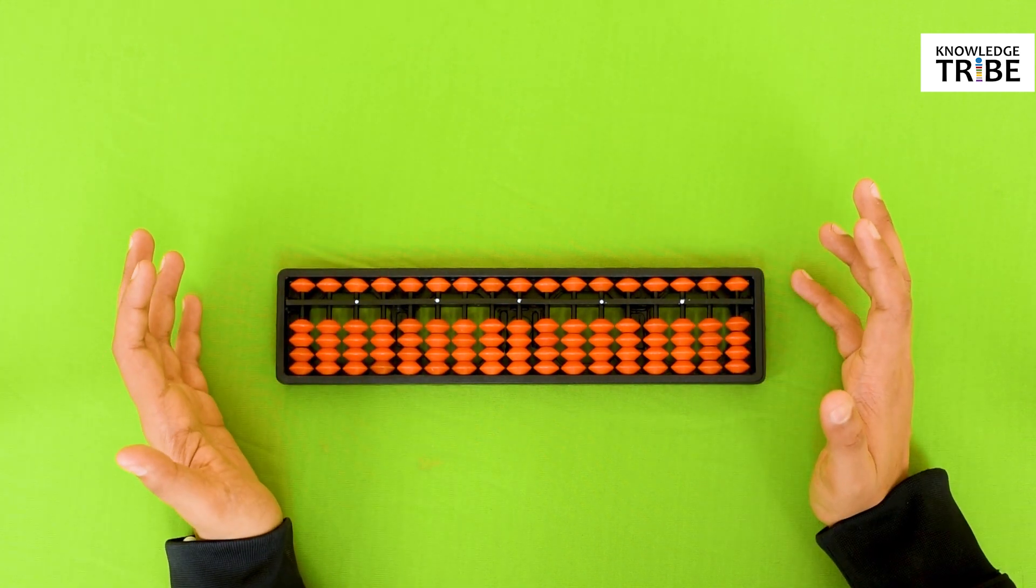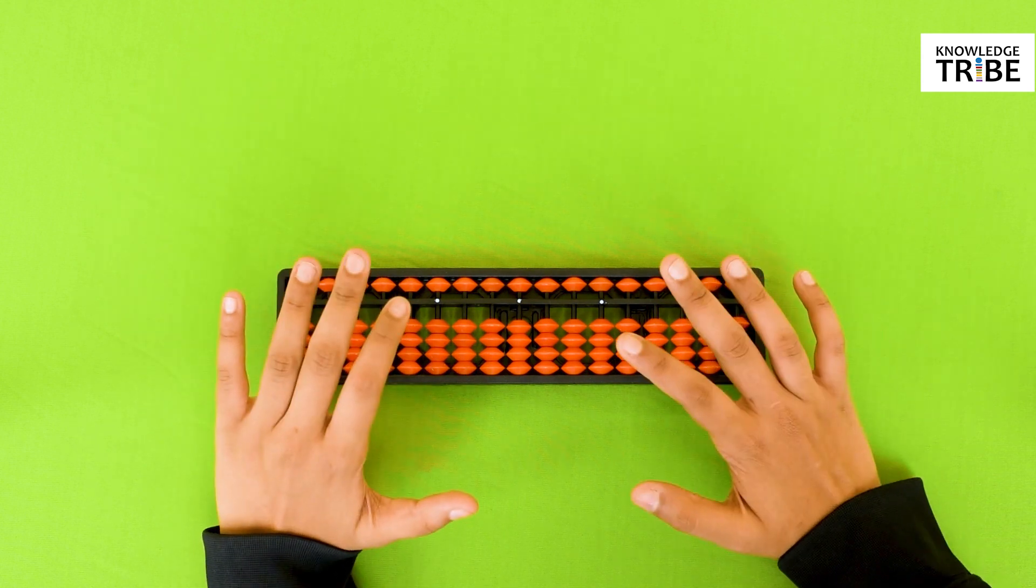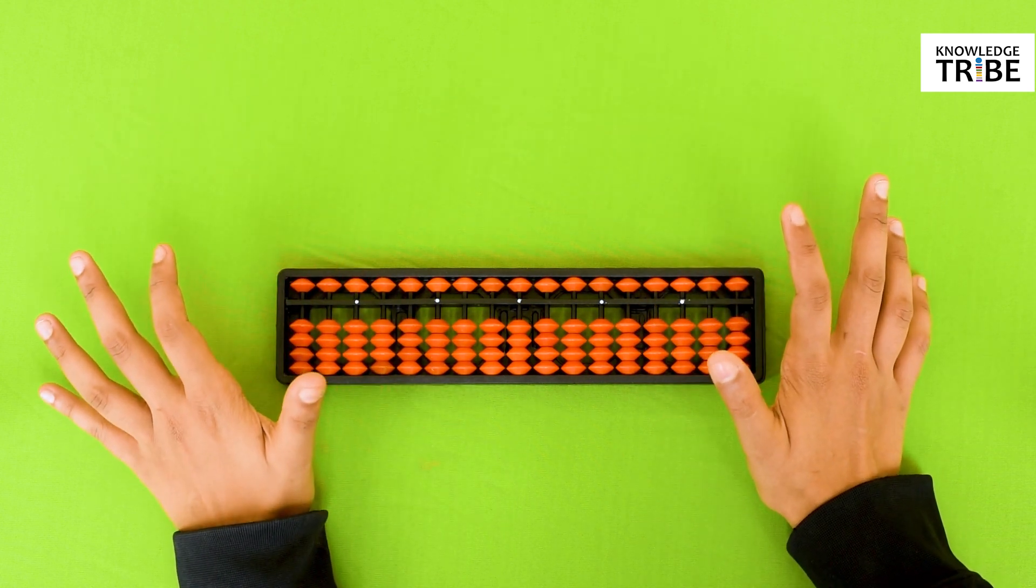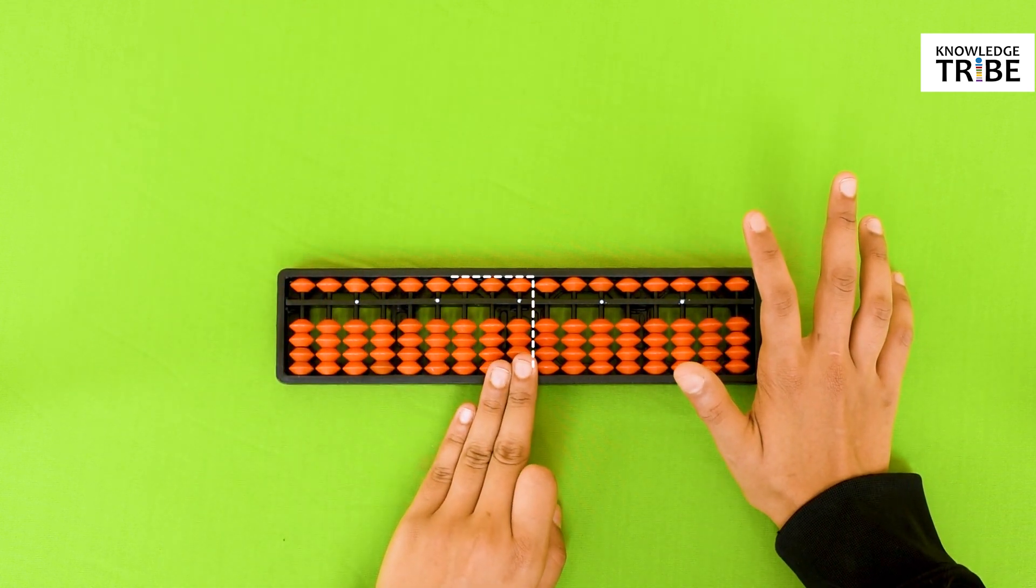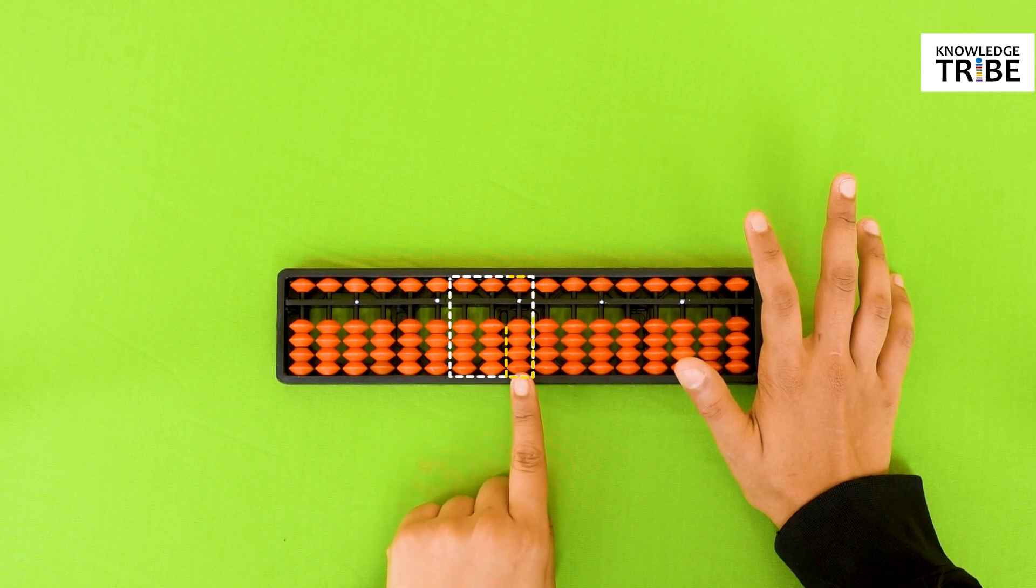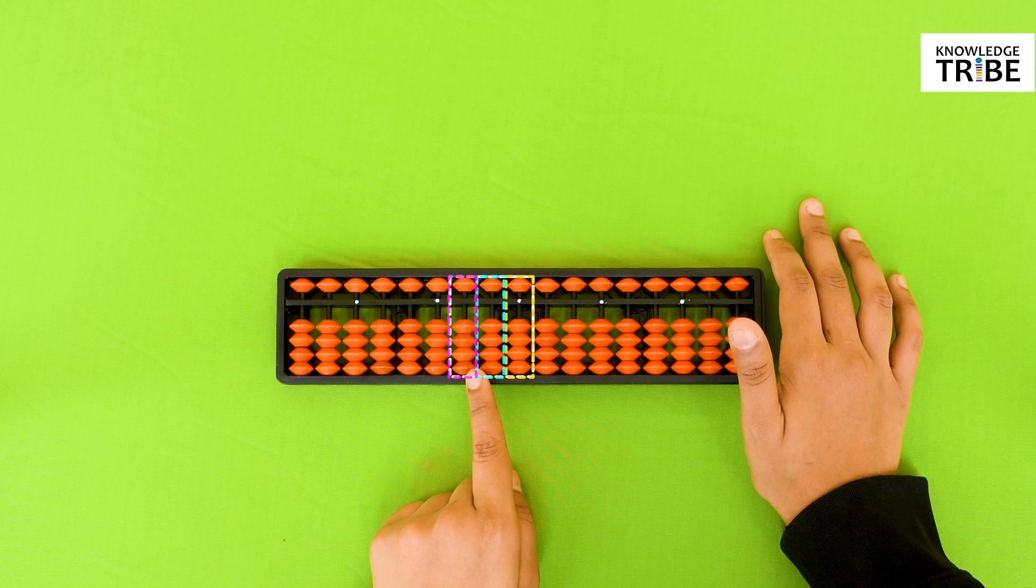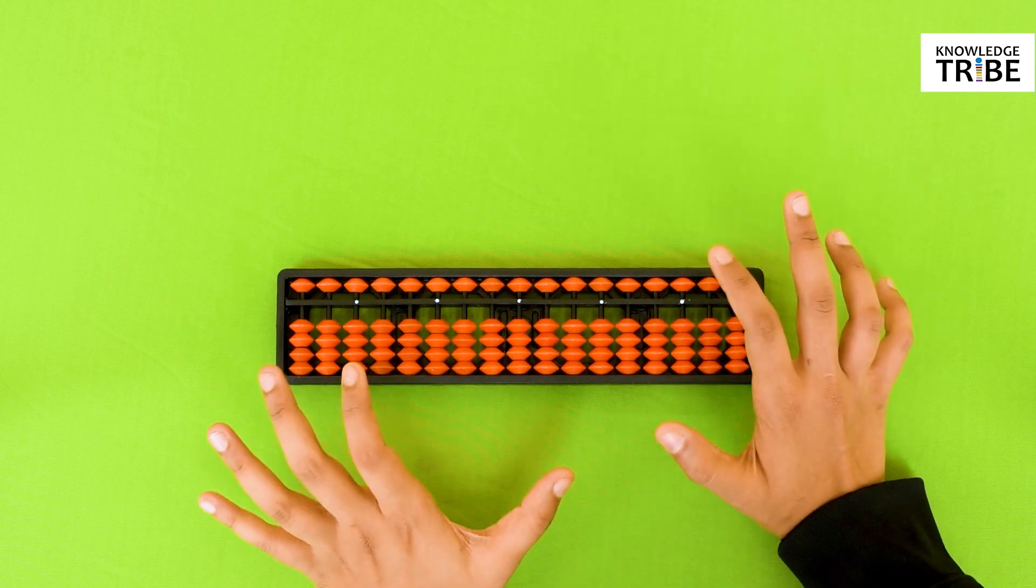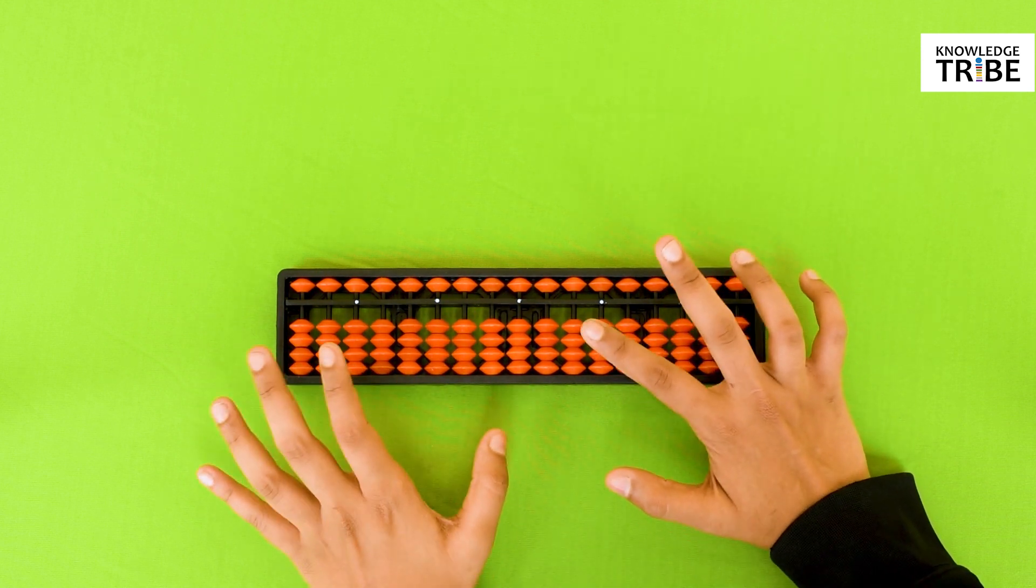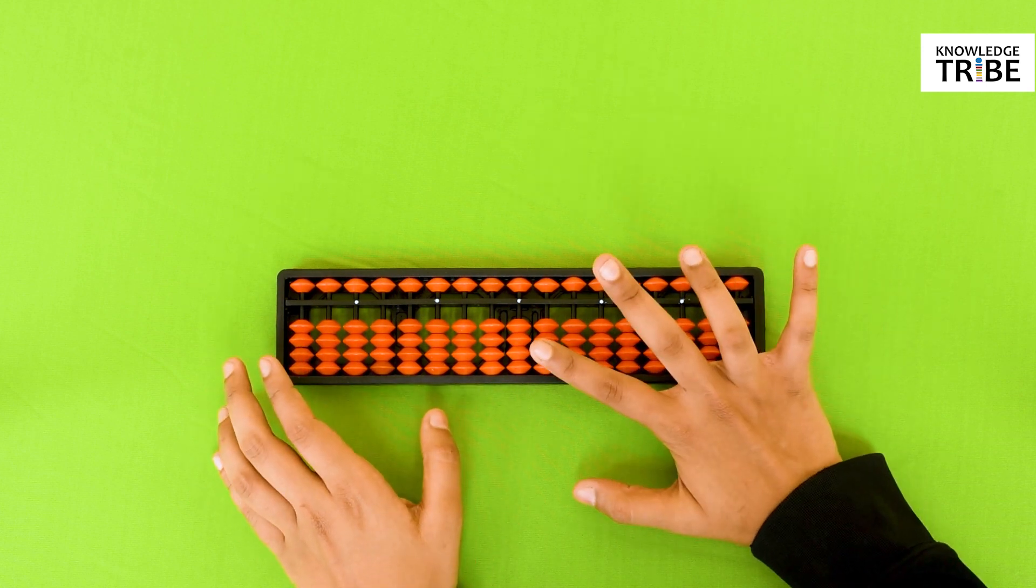Now let's start counting. We will avoid all the other columns and focus only on these three right here. This is the ones column, the tens column and the hundreds column. Where there is no bead near the central beam, it denotes 0. Now we are on 0.